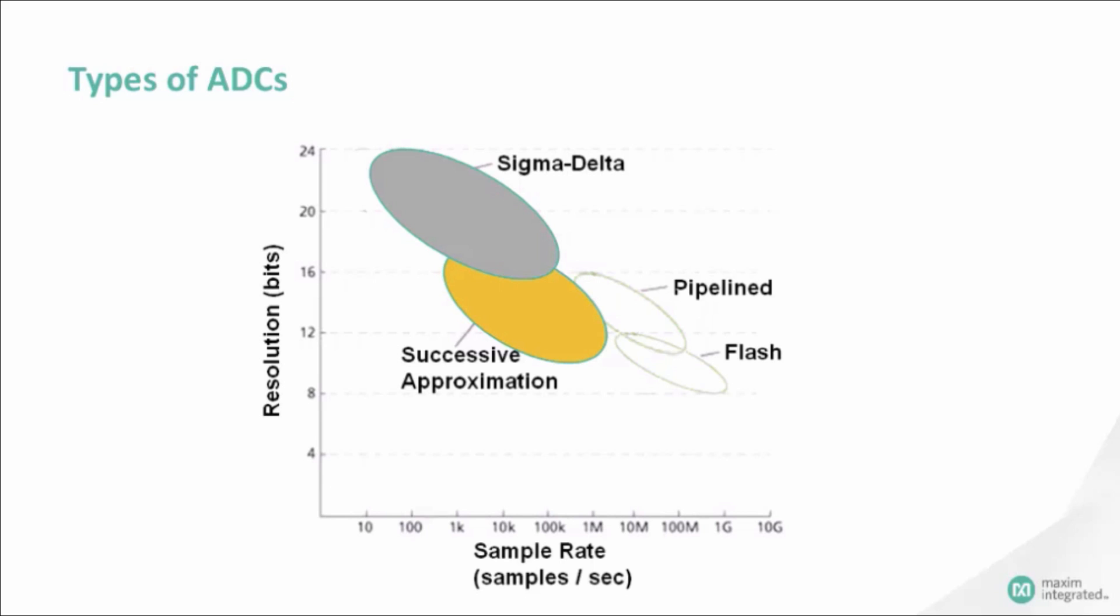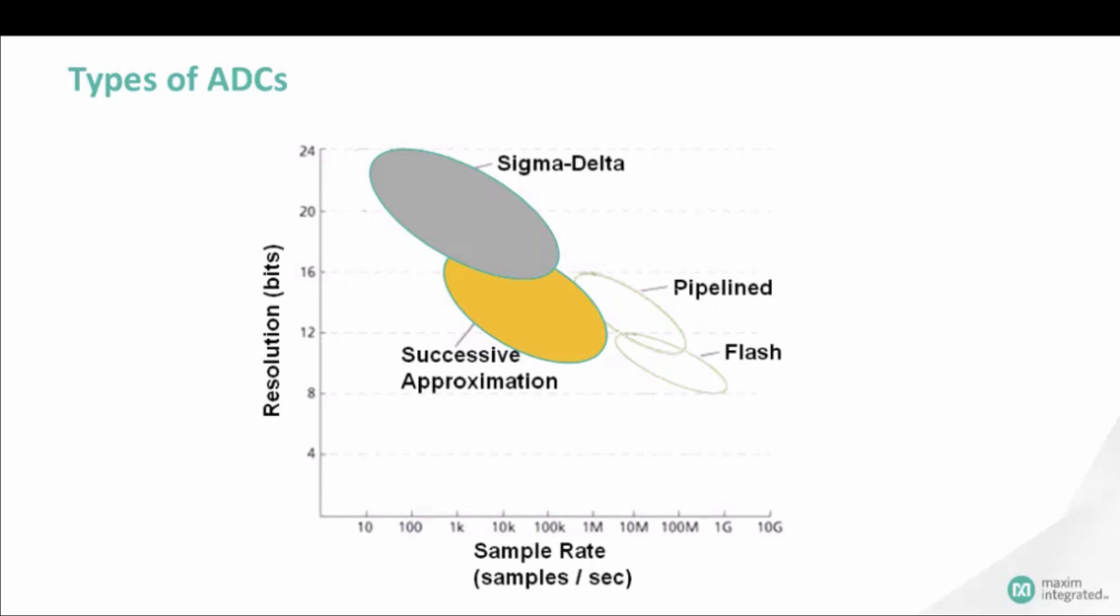Pipeline ADCs can go to 100 mega-samples per second, 8 to 16 bits, and have lower power consumption than flash. Flash and pipeline ADCs are typically used in high-speed data acquisition, radar systems, and digital RF signal processing.